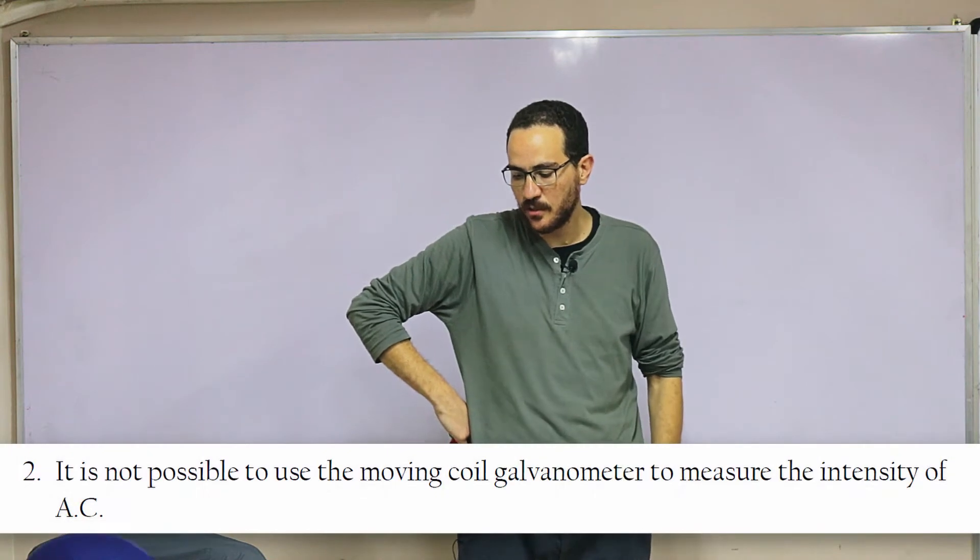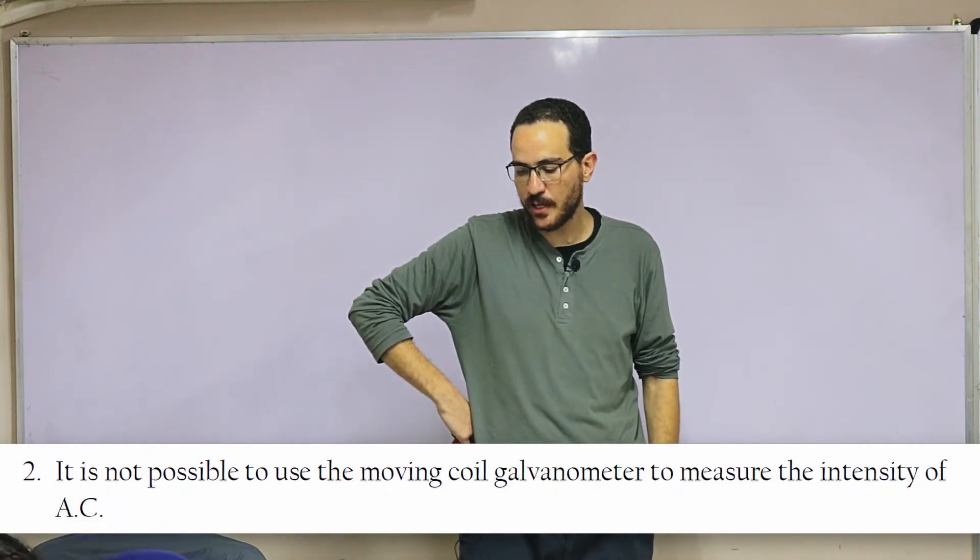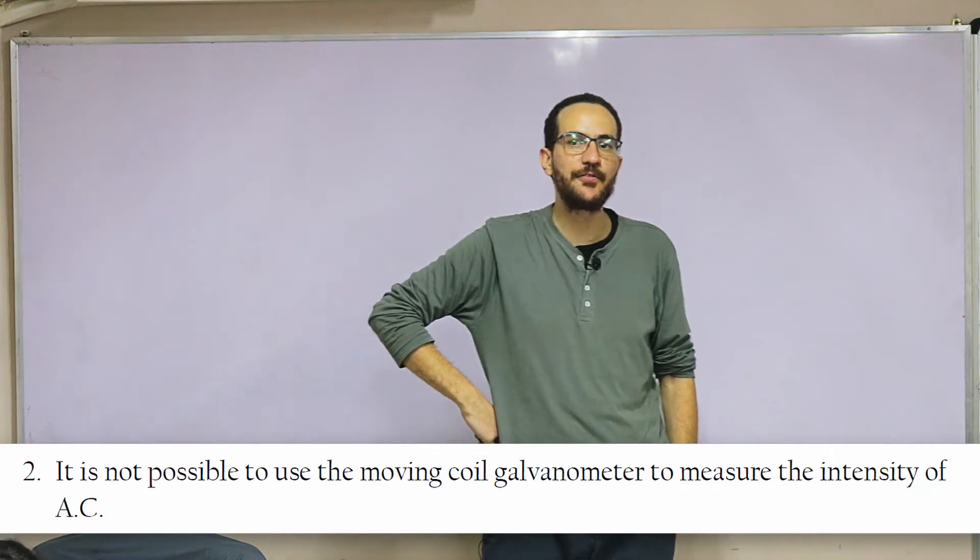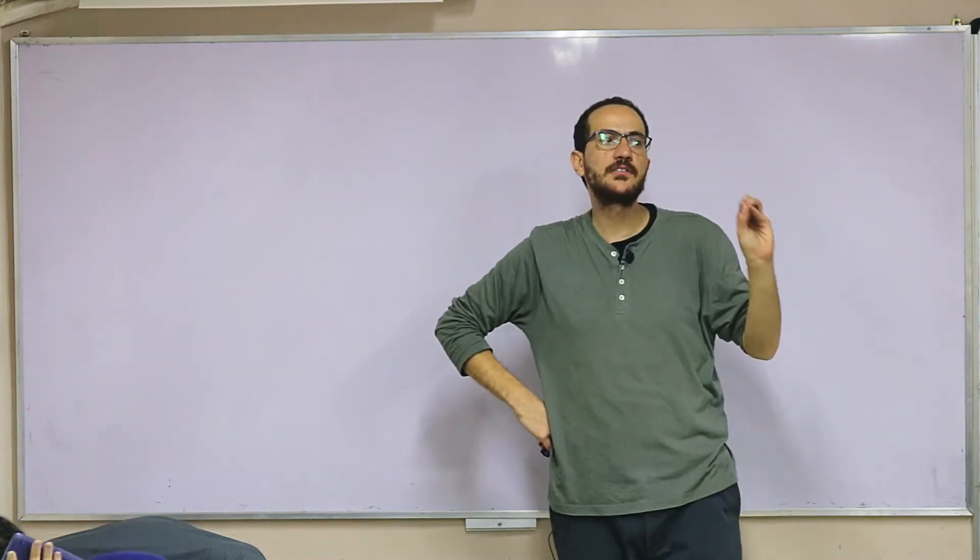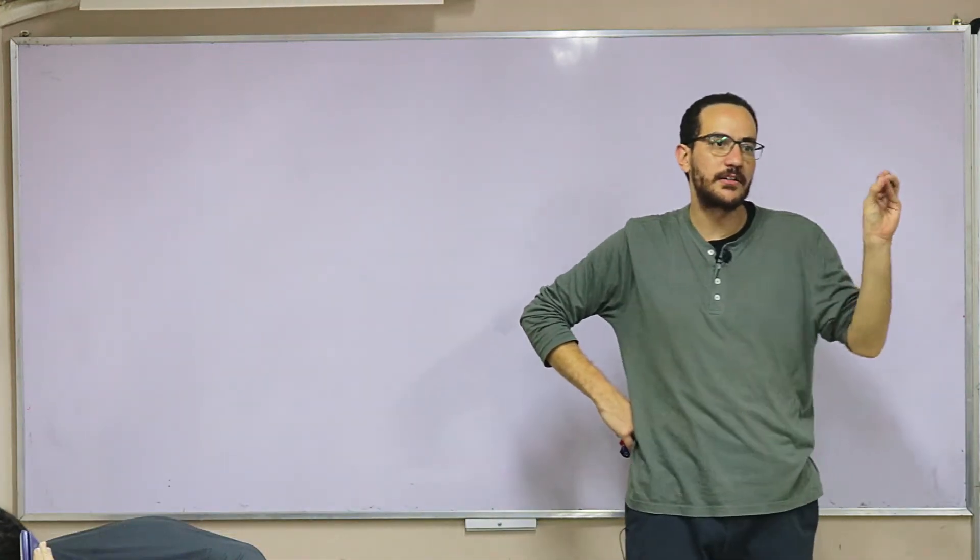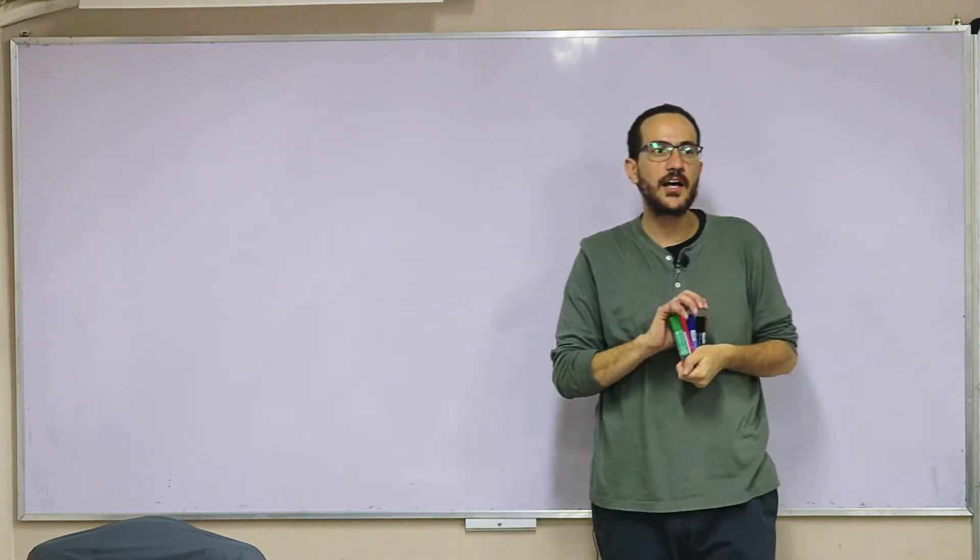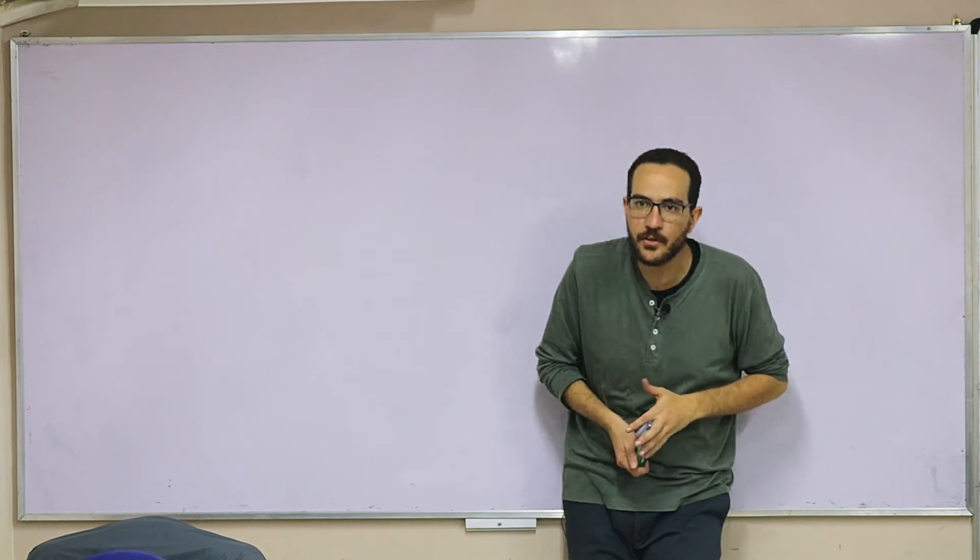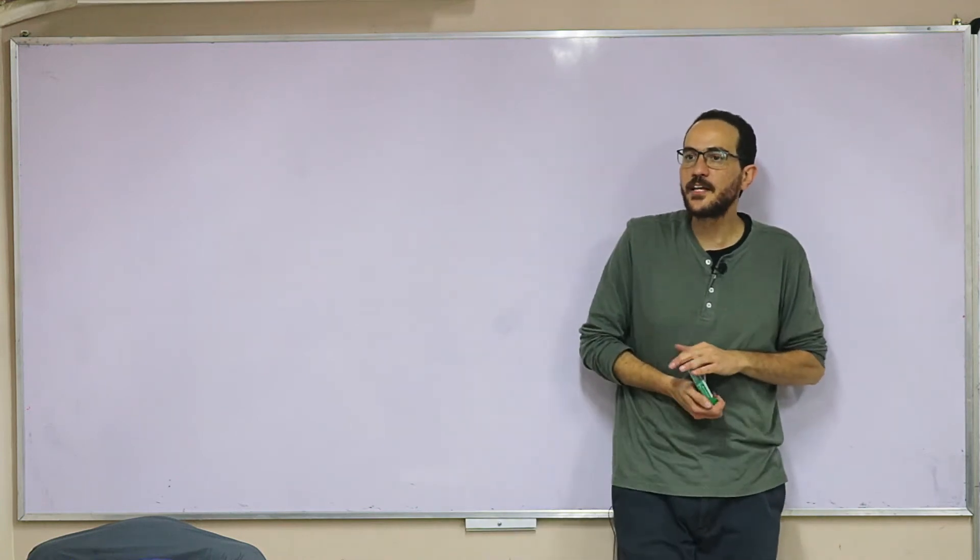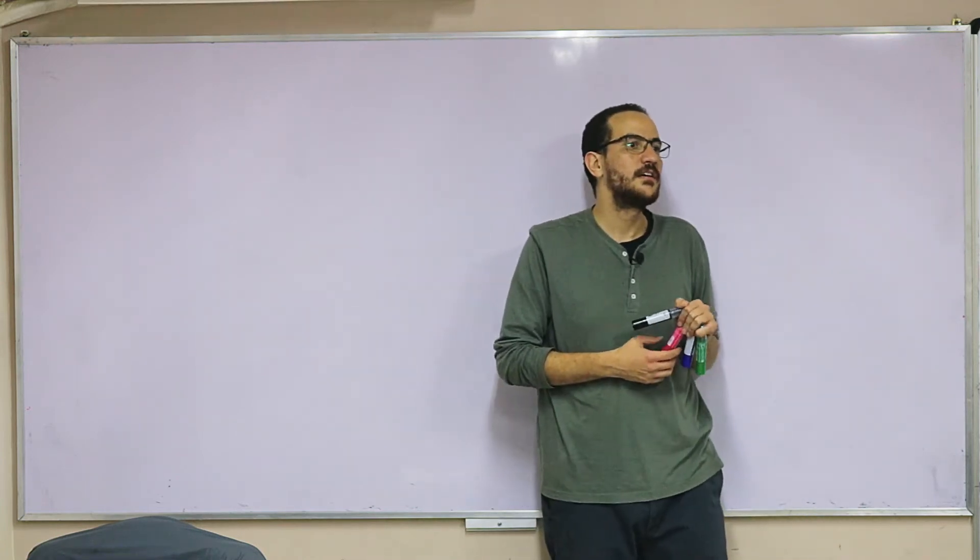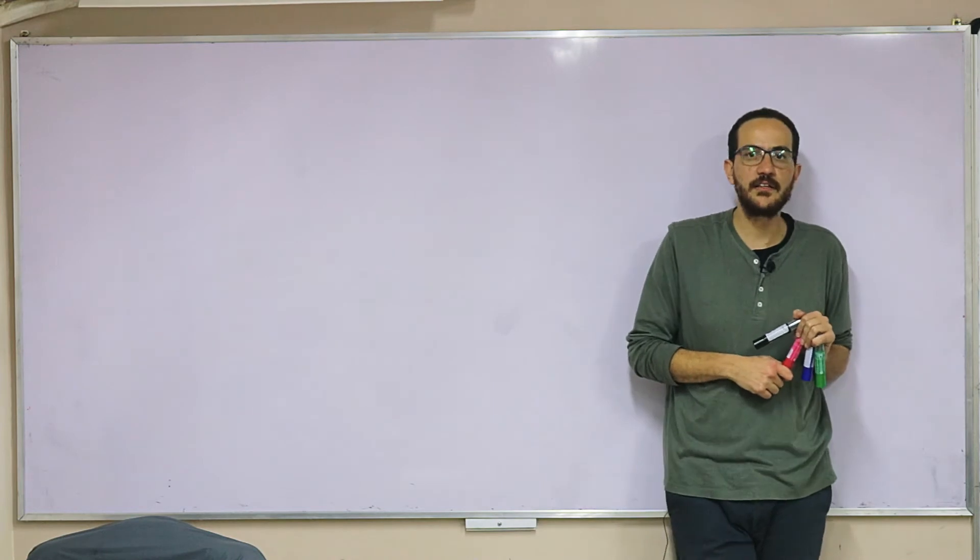It is not possible to use the moving coil galvanometer to measure the intensity of AC current because AC is alternating current. Because AC is changing its magnitude and direction, the pointer will keep vibrating, giving no fixed reading.